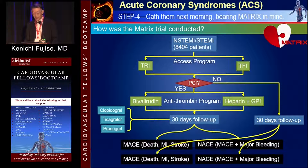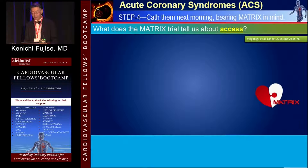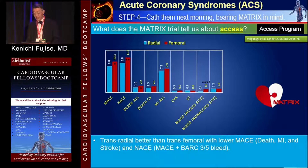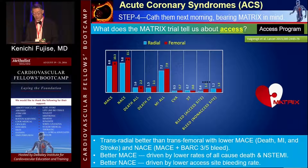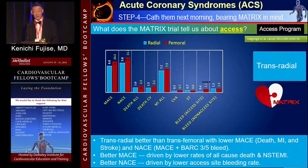What does the MATRIX trial tell us about access? Data clearly indicate the transradial approach is better than the transfemoral approach, with lower MACE and NACE. Better MACE was driven by lower rates of all-cause death and non-STEMI. Better NACE was driven by lower access site bleeding complication rates. So the clear winner for ACS PCI was the transradial approach.